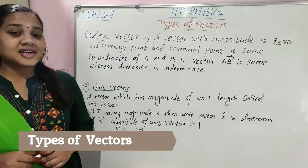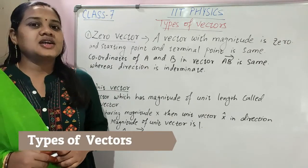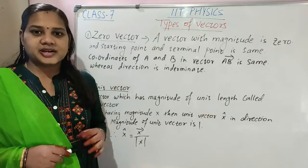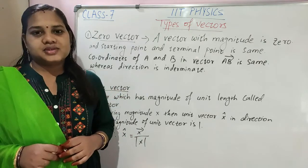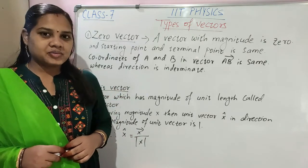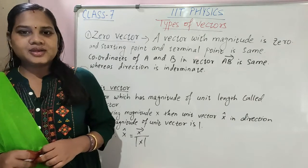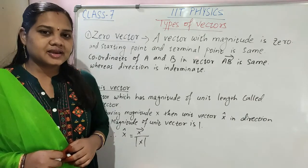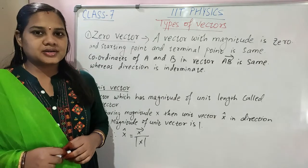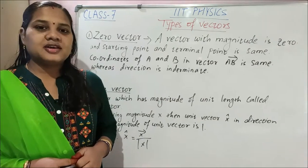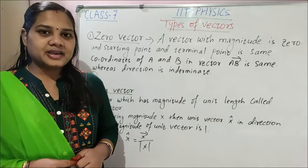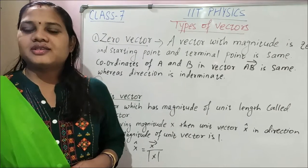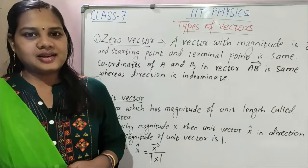Already in the last class we started this topic types of vectors and we discussed four important types. What are they? Remember now, I hope you are writing the notes, maintaining it neatly and going on practicing it. So children, they are equal vectors and negative vectors, like and unlike vectors.